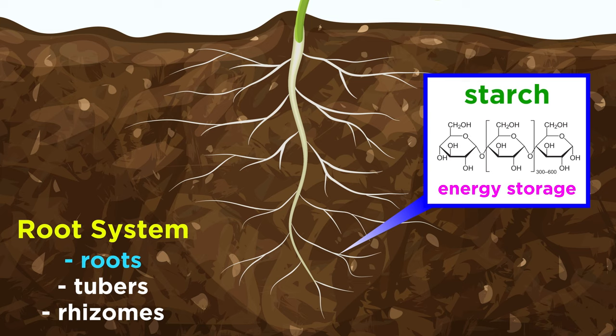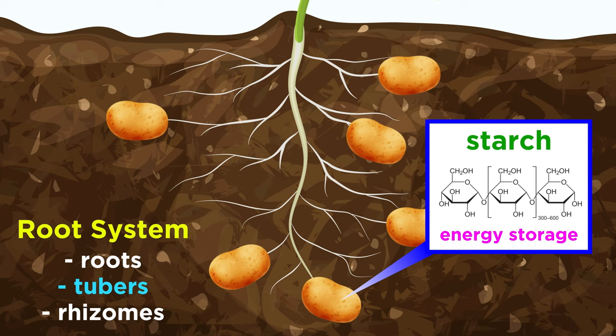Many plants also use their roots as a place to store starches, a convenient form of long-term energy storage made of complex polysaccharides, which we learned about in the biochemistry series. However, other plants, like potatoes, store their starch in underground organs called tubers.